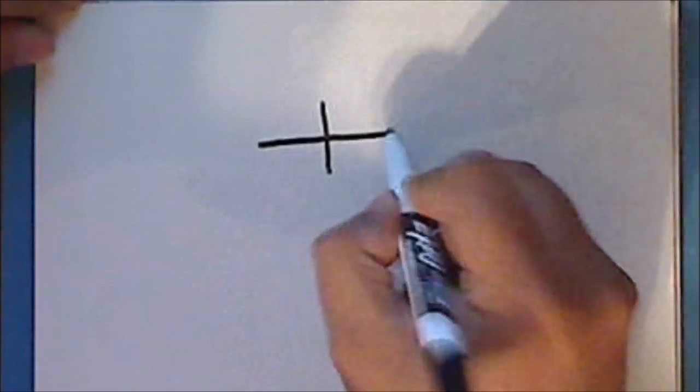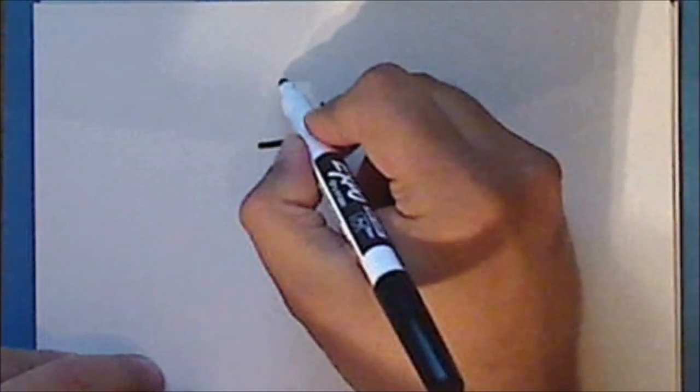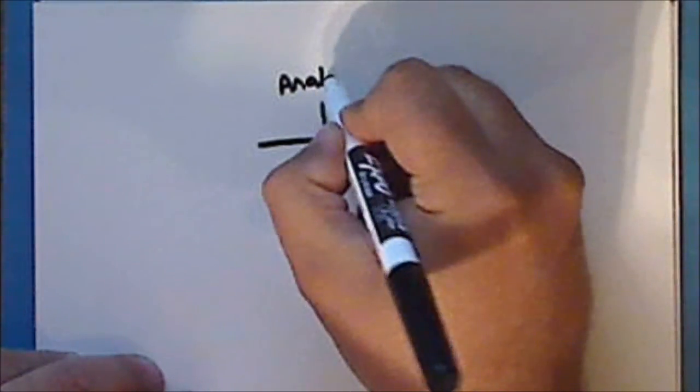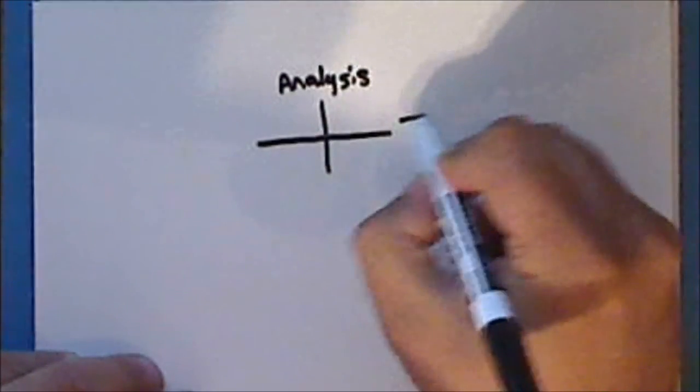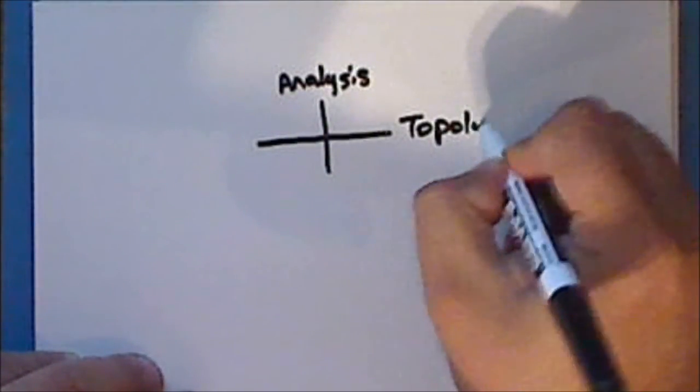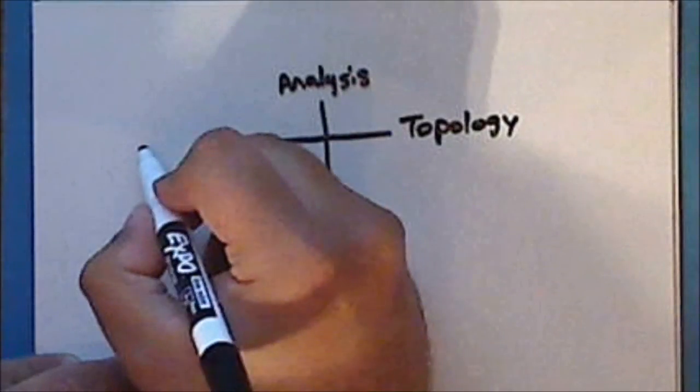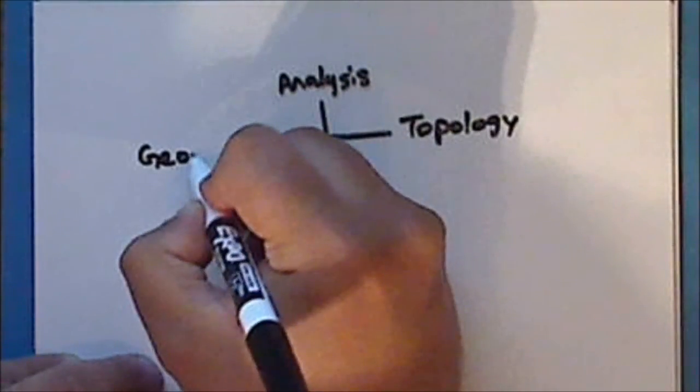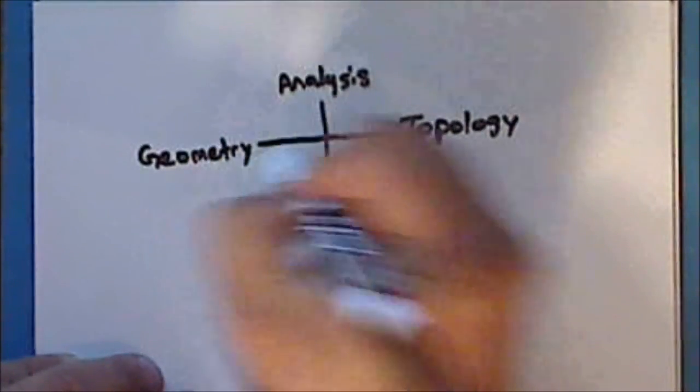Analysis is one of the four main branches of mathematics, along with topology, geometry, and algebra.